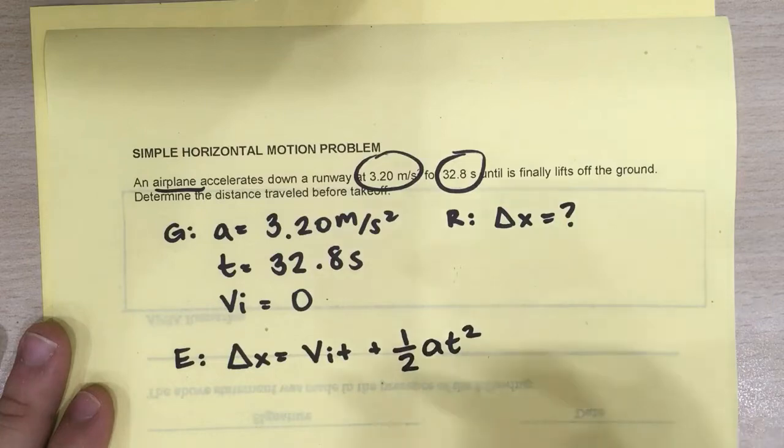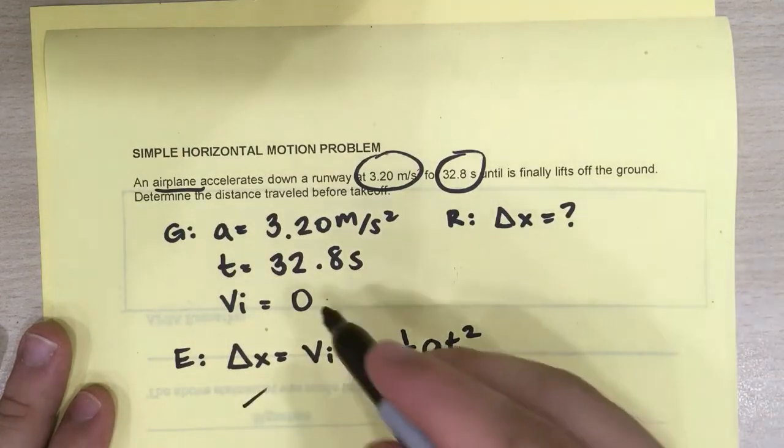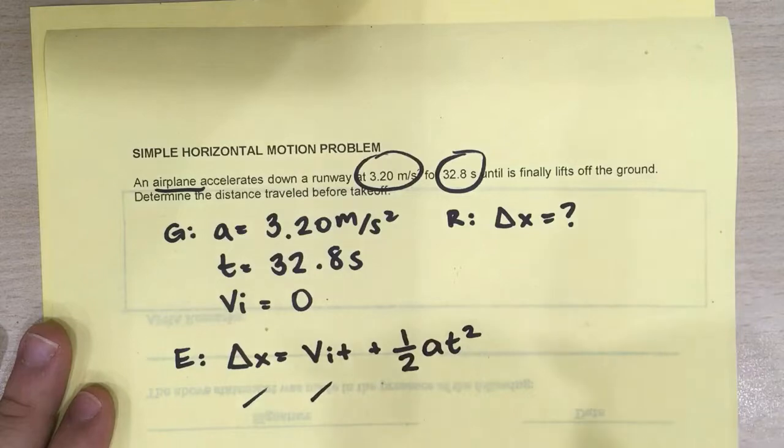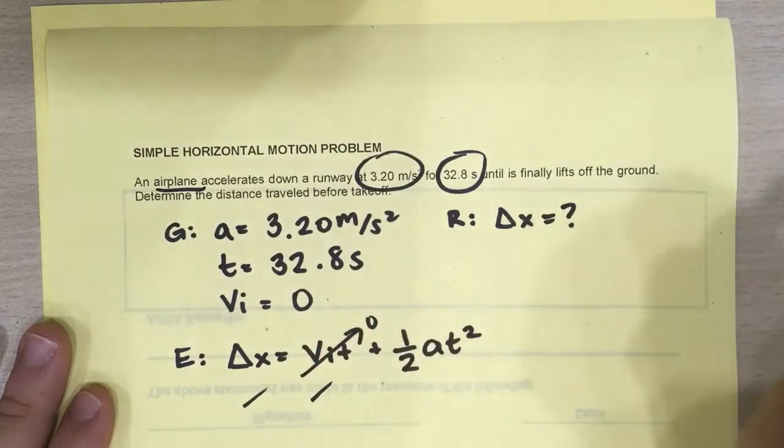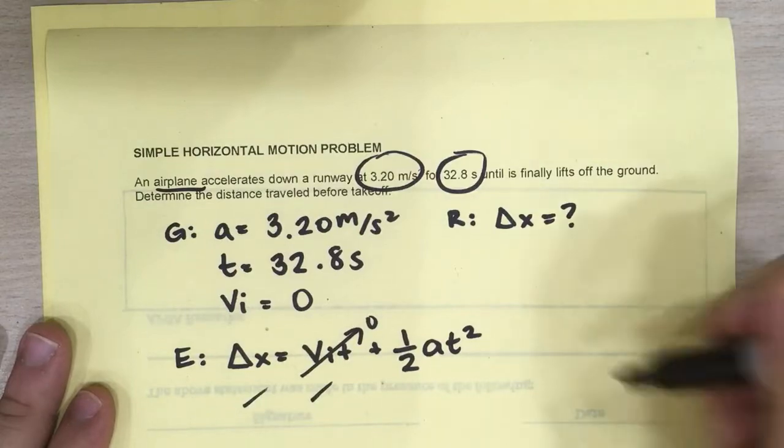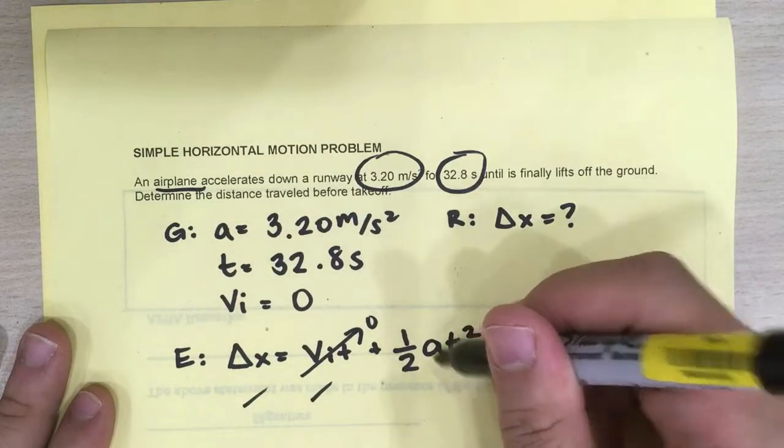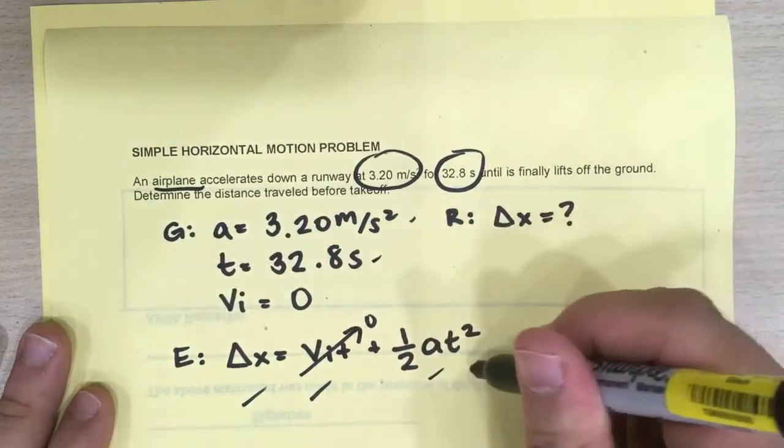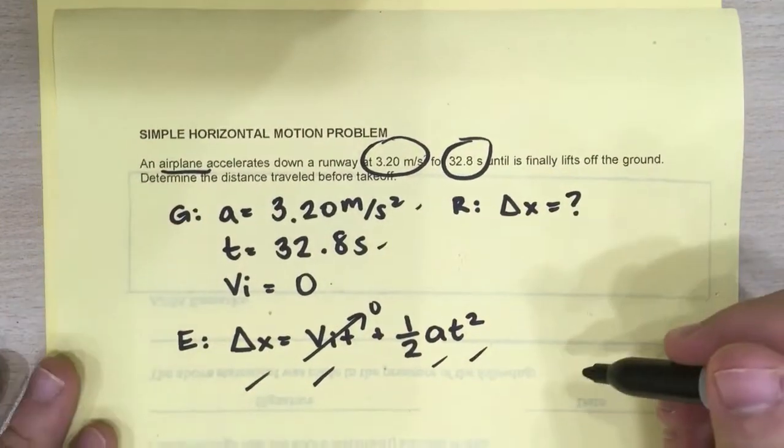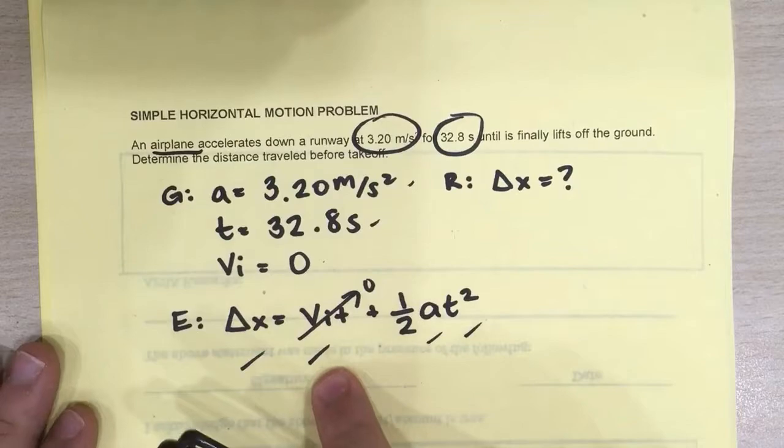Okay, let's check. Do we have a delta X? Well, we're looking for it. Do we have a Vi? Yes, we do. And it's zero. Therefore, this entire thing would cancel out because zero times anything is simply zero. Okay, one-half, a. Do we have an a? Well, we do. So that's a check. And we definitely have a time. This is a check. We can therefore start solving using this equation here.